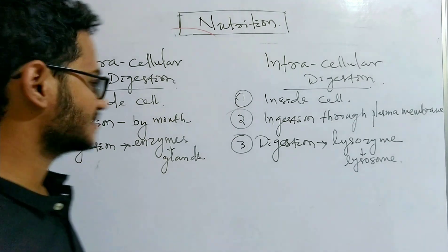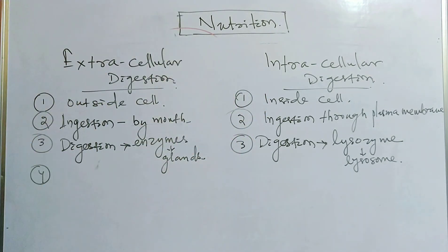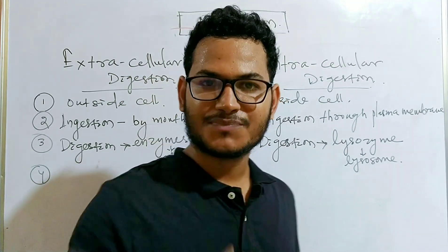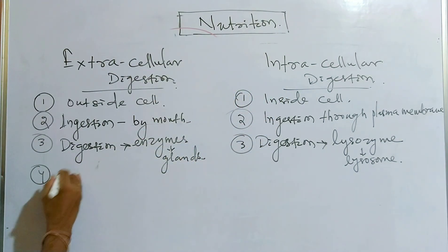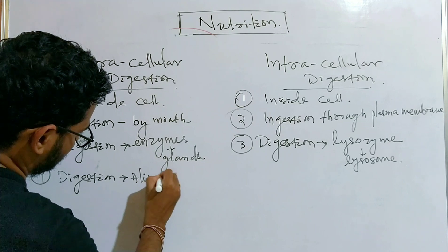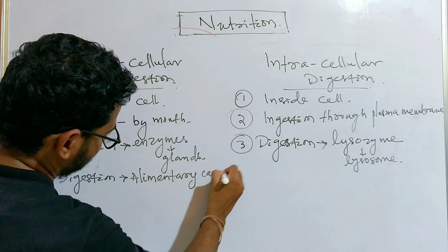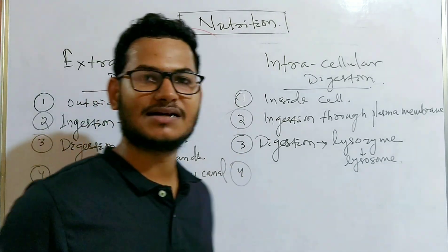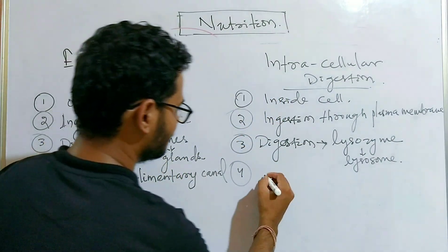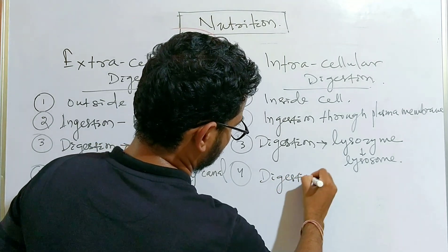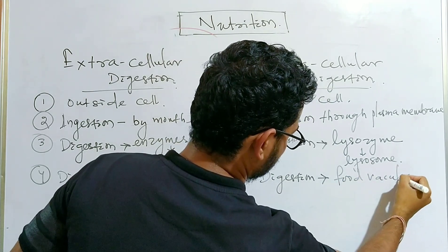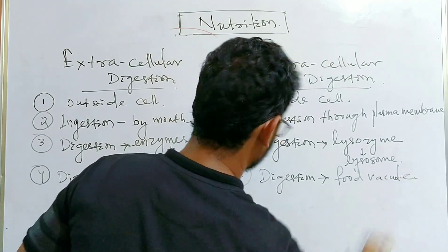In extracellular digestion, digestion takes place inside a particular canal known as the digestive system or alimentary canal. In intracellular digestion, food enters the cell and forms a food vacuole, so digestion takes place inside the food vacuole.